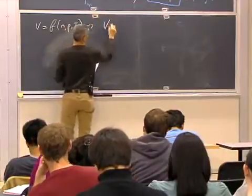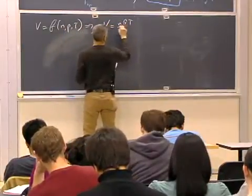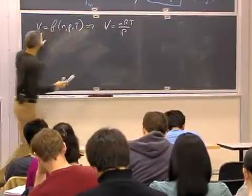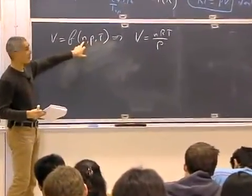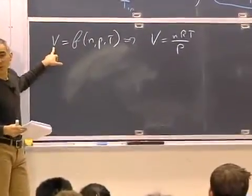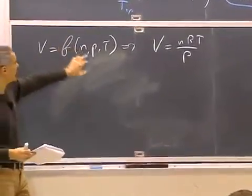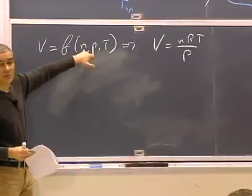In this case, v equals nRT over p. If you have two quantities, and the number of moles gives you another property. You don't need to know the volume. All you need to know is the pressure and temperature and the number of moles to get the volume.